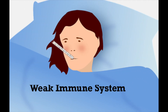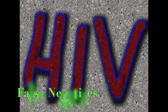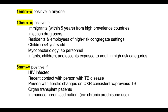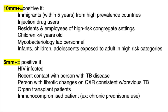Also, a weak immune system, like someone who has HIV, can lead to false negatives. Tip number fourteen: interpretation is based upon two different things — the diameter of the induration and the risk of an individual being infected with TB. For example, if the induration is 15 millimeters or greater, it is considered positive. But certain categories of individuals with risk factors or certain conditions may require a smaller millimeter threshold. I always think it's good to get a little reference chart to carry with you if you're going to be reading these.